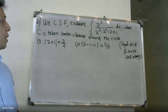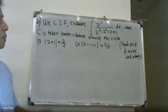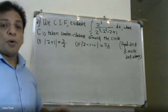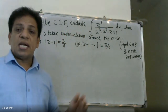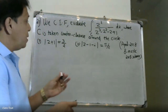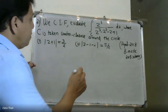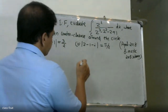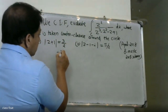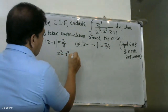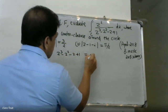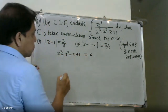Here is the problem we are working on. Because this function has singular points — analytic points — we need to find them. We set z cubed minus z squared minus z plus 1 equal to 0.